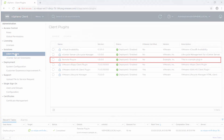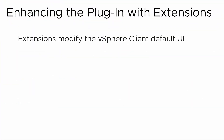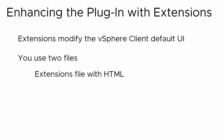Now that the sample plugin is installed, let's add some functionality. Plugin extensions enable you to modify the vSphere client's default views, menus, or other UI controls. To add an extension, you need two files: a file that contains the HTML to be displayed in the vSphere client, and the plugin.json file, which declares what areas of the vSphere client the plugin modifies and contains the data that the vSphere client uses to load the extension UI.